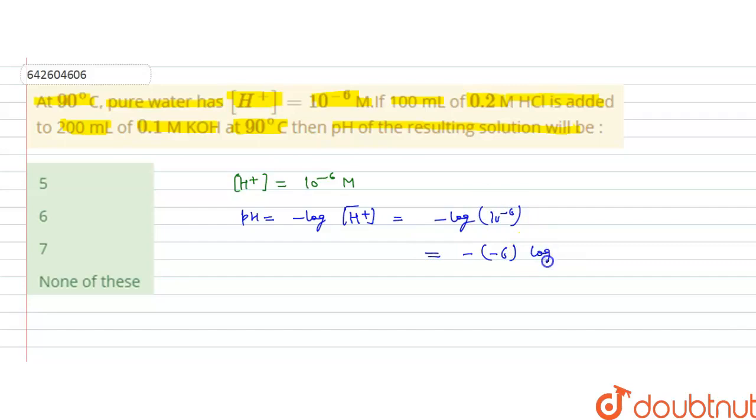So this minus minus of 6 log 10, log 10 value is 1, so it will be 6. It means pH of the neutral solution or pH of pure water at 90 degrees Celsius is 6.